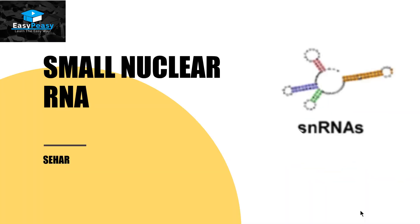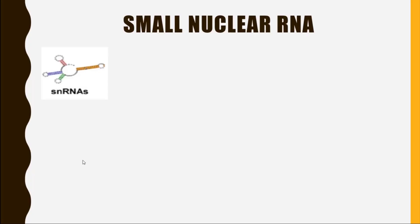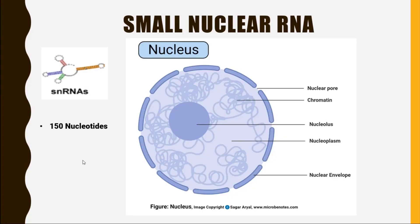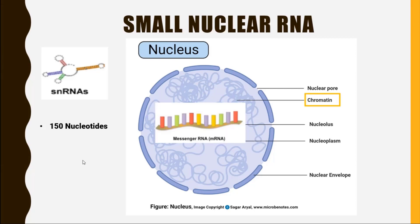Hello friends, this is Zahir from Easy Beasy, and the topic we are going to discuss today is small nuclear RNA. Small nuclear RNA also belongs to the category called small non-coding RNA, as it has nucleotides of 150. It is present inside the nucleus of the cell, where chromatin material synthesizes messenger RNA. The function of small nuclear RNA is to perform post-transcriptional modifications on mRNA.